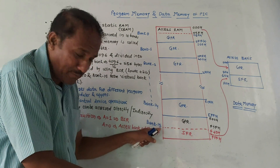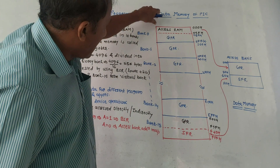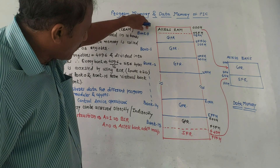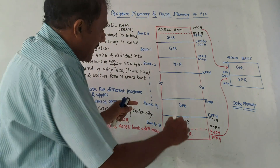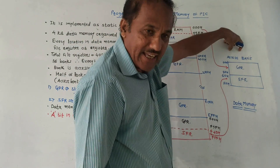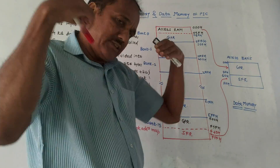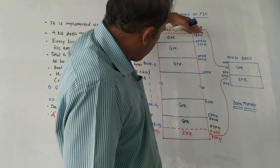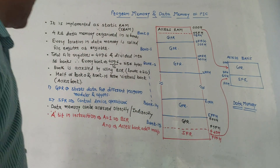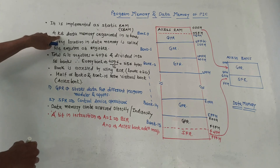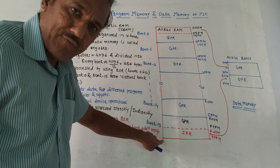The last bank — bank 15 — its lower portion contains SFR, that is Special Function Registers. The upper portion of bank 0 forms what is called the access bank. The access bank is a virtual bank generated by taking the upper portion of bank 0 and the lower portion of bank 15. Total data memory is 4 kilobytes organized in 16 banks, bank 0 to bank 15.